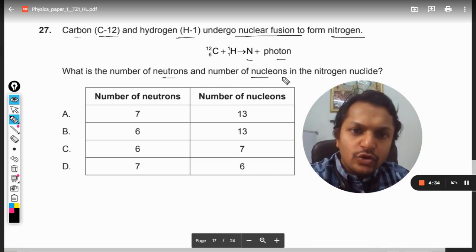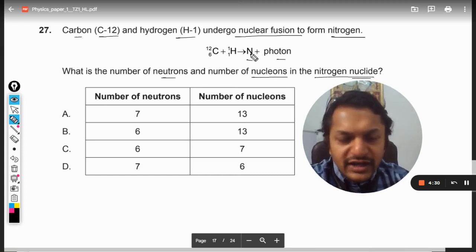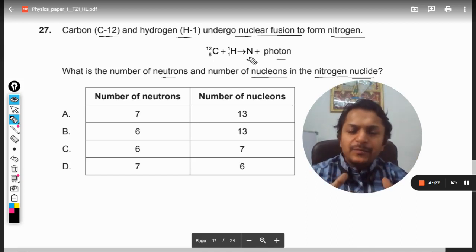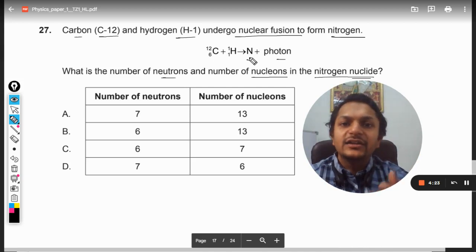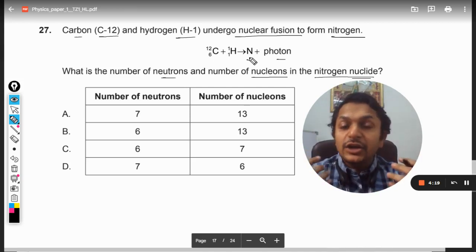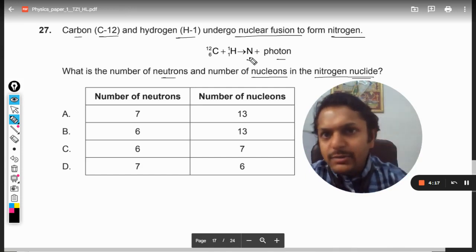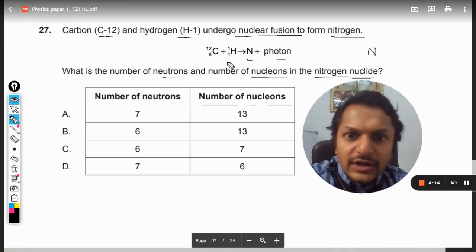What is the number of neutrons and number of nucleons in the nitrogen nuclei? This nuclei is not shown completely, so we have to first create the nuclei. That is, we need to find the total number - we need to find the atomic number and the atomic mass number that can be created here for the nitrogen.